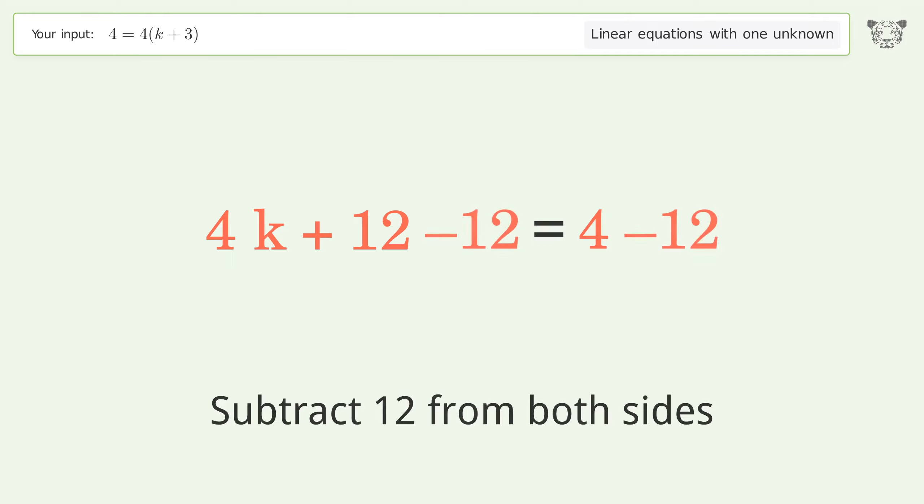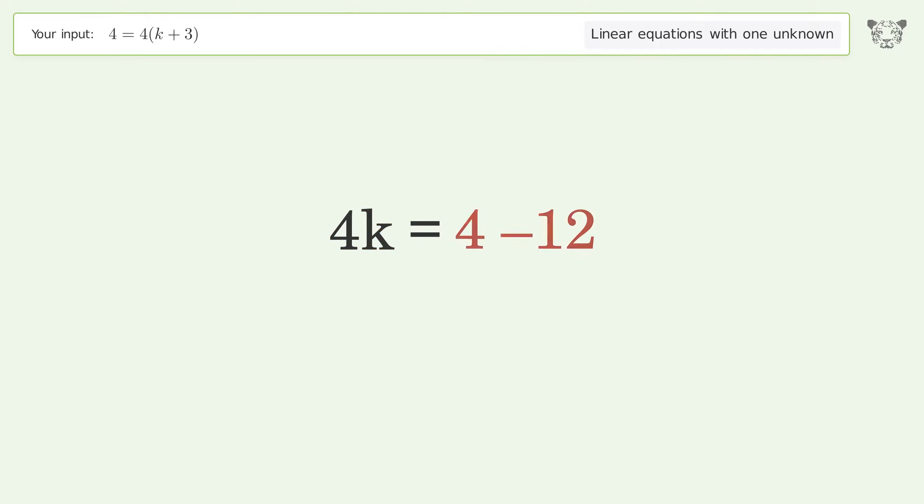Group all constants on the right side of the equation. Subtract 12 from both sides. Simplify the arithmetic.